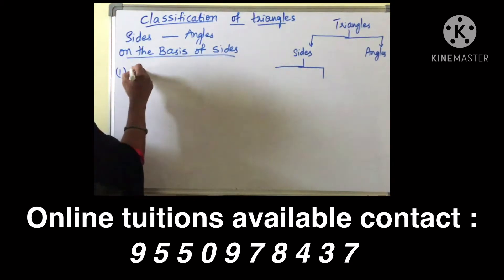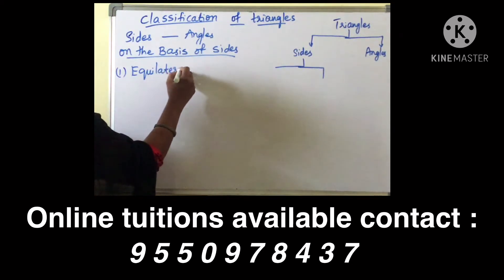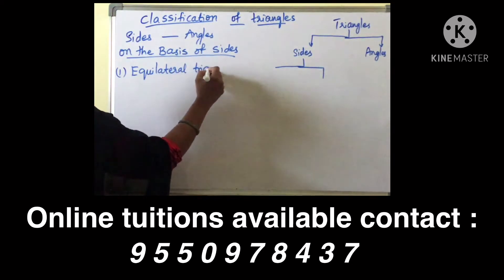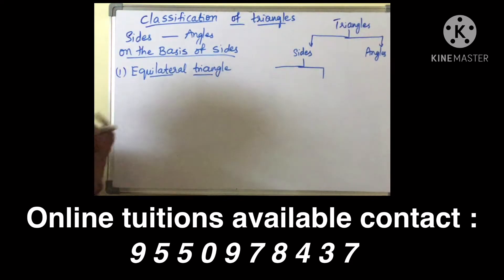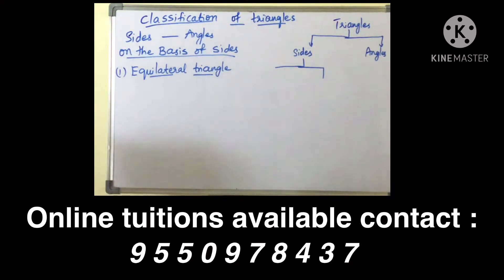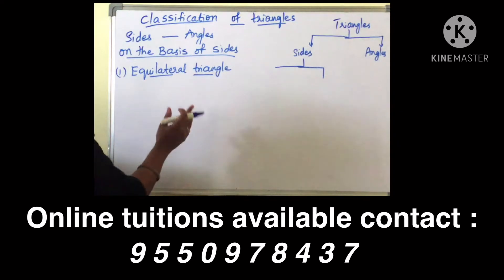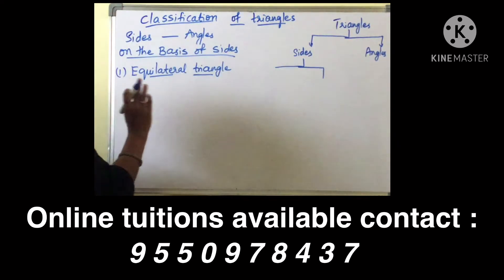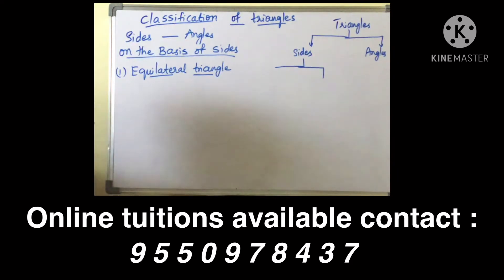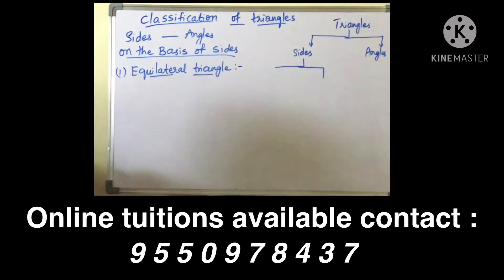First one is equilateral triangle. 'Equi' means equal, 'lateral' means sides. So equilateral means a triangle in which all the three sides are equal — here we are considering sides, children. A triangle in which all the three sides are equal, then we can say the triangle is an equilateral triangle.